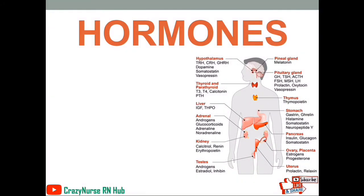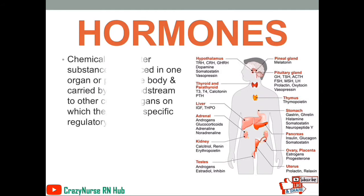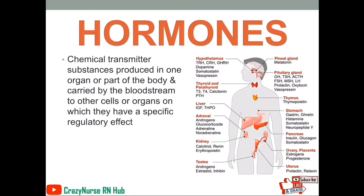First, let's discuss hormones. These are chemical transmitter substances produced in one organ or part of the body and carried by the bloodstream to other cells or organs on which they have specific regulatory effects. They are produced mainly by endocrine glands.